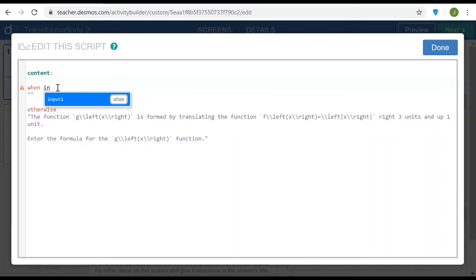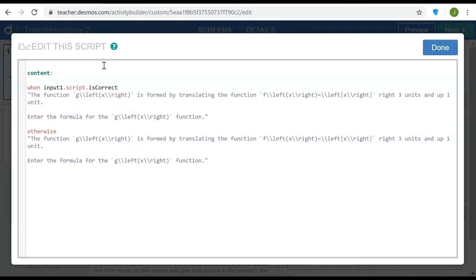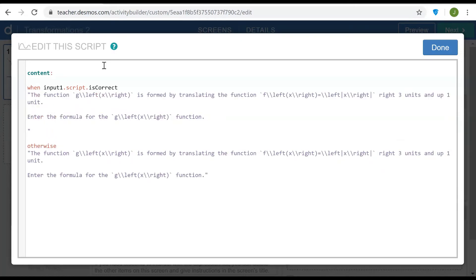The answer is judged whether it's correct or not based on the input, so here's where we can access input1.script and the variable isCorrect. So if that's true then I want the text of the note to indicate that. So I'm going to copy what we have here inside the quotation marks and paste it up above and then simply add the line your answer is correct.